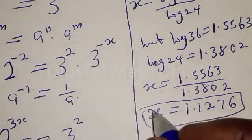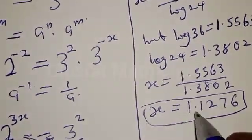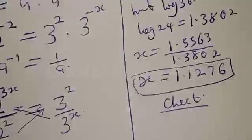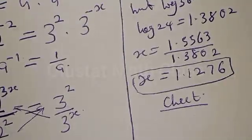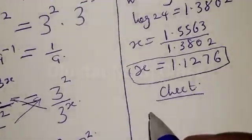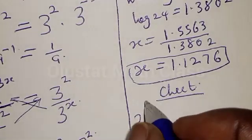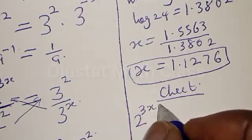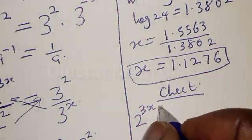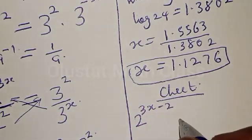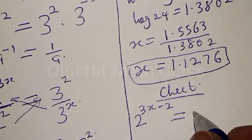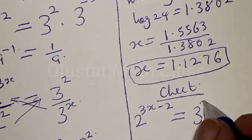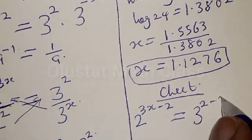Then we can check in order to confirm our answer. We have the given equation: 2 raised to power 3x minus 2 must be equal to 3 raised to power 2 minus x.